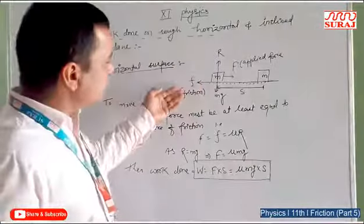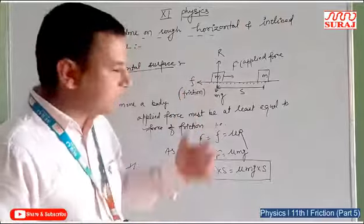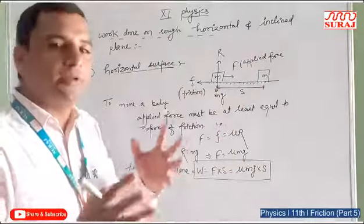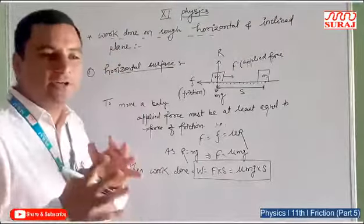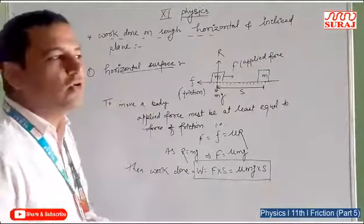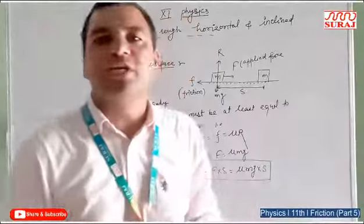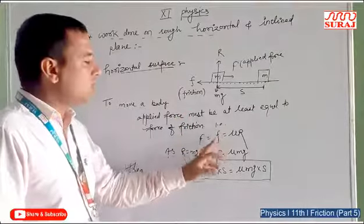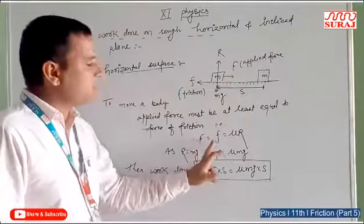If we want to move this body, we apply a force in this direction. The force of friction acts opposite to the applied force at the point of contact. Let this body move under the force F through a displacement S. The applied force must be equal to the force of friction for the body to move.